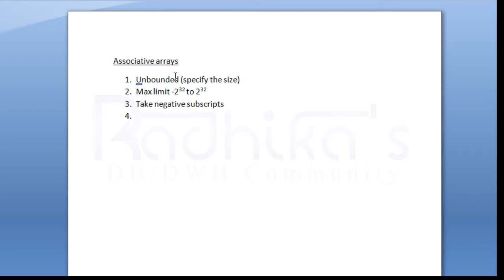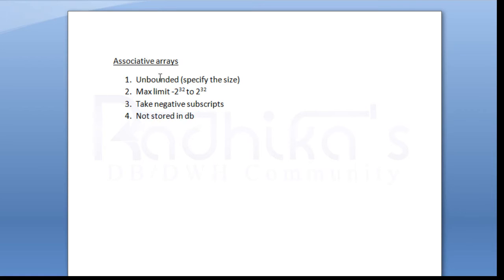The fourth point is that associative arrays are not stored in the DB. This is a very important point. Unlike nested tables, associative arrays are not stored in the database — just like records. That is the main difference you need to know about associative arrays compared to other collection types.